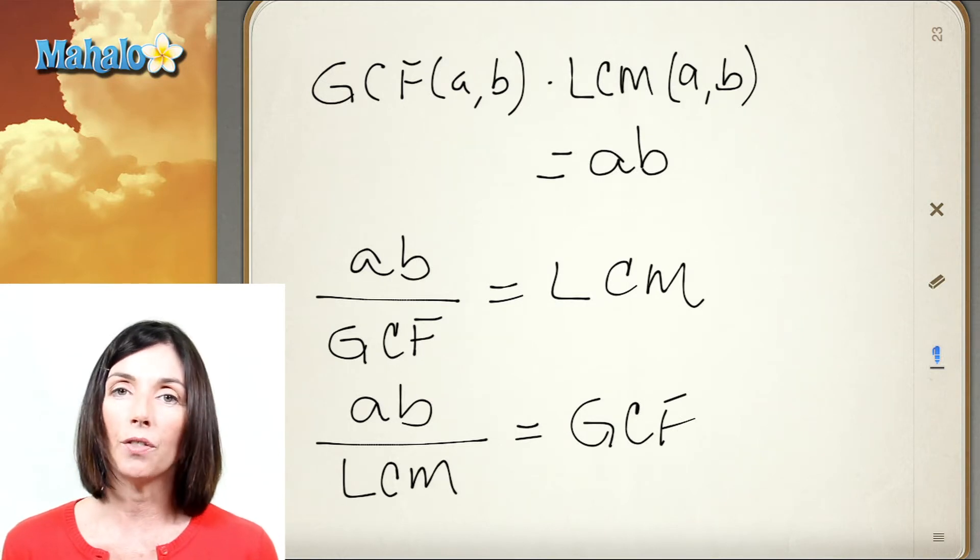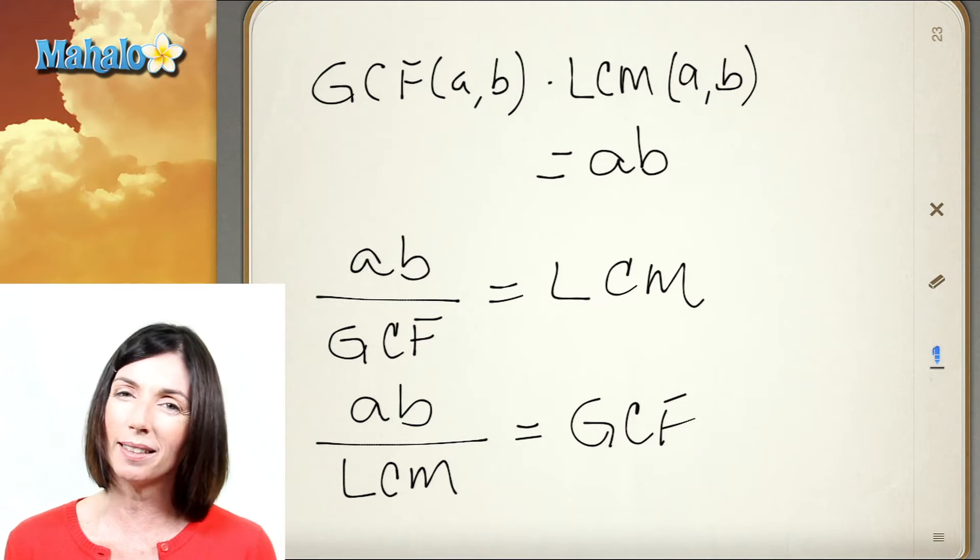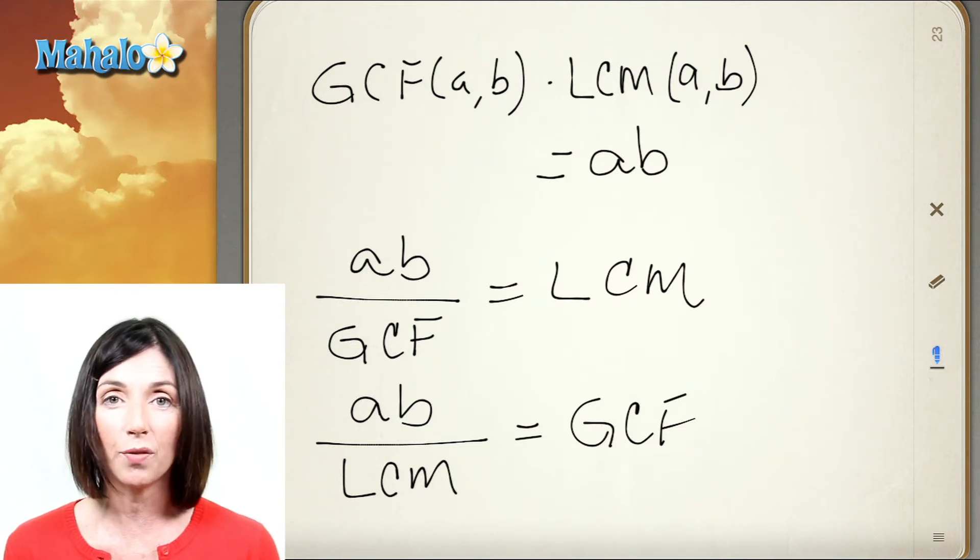This can be very convenient if you have a couple of numbers where it's kind of easy to find the greatest common factor but not so easy maybe to find the least common multiple, or vice versa.